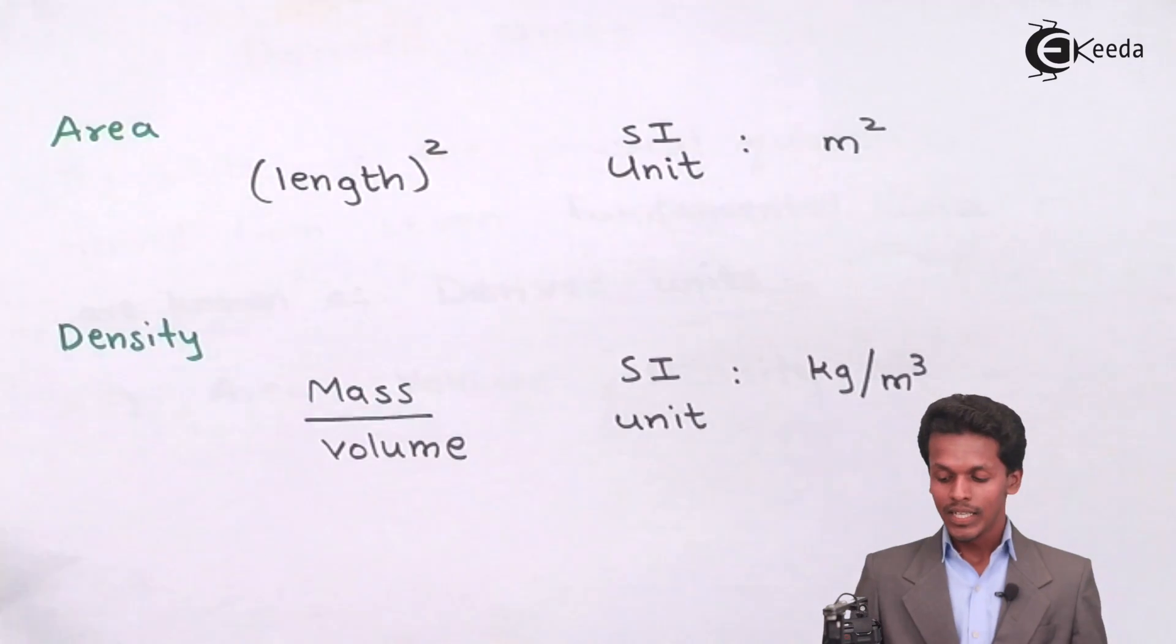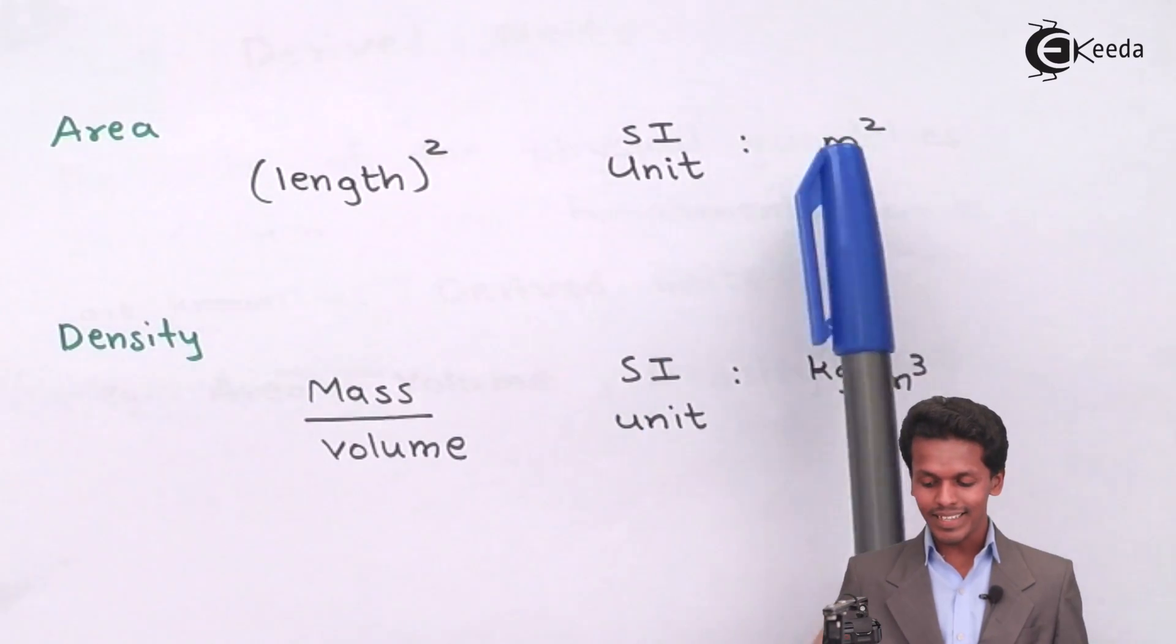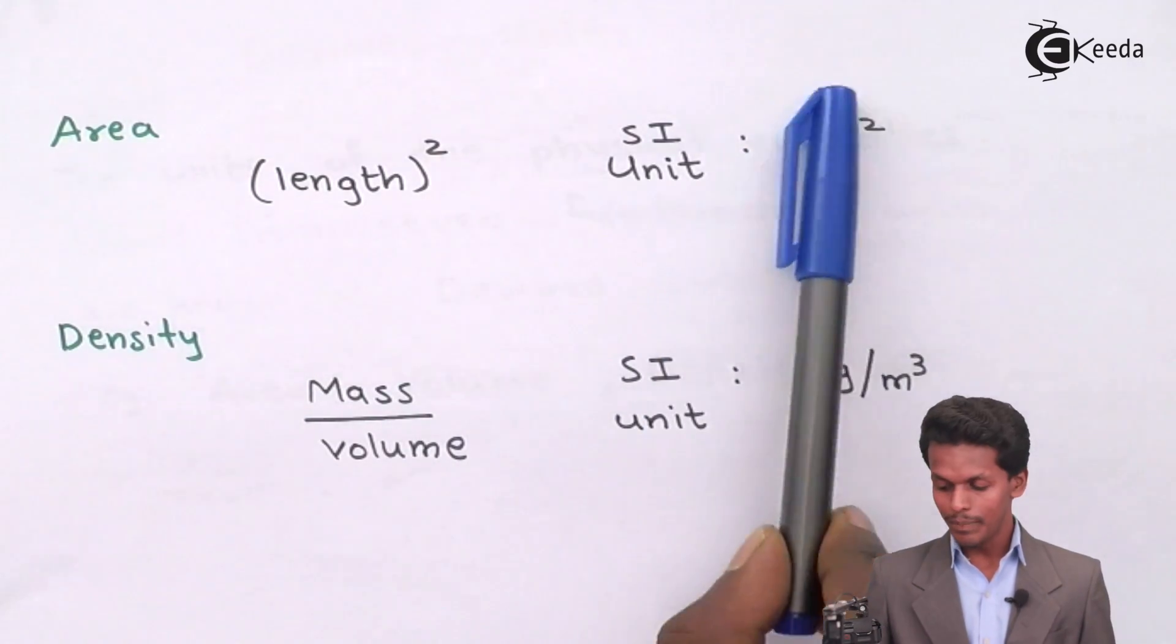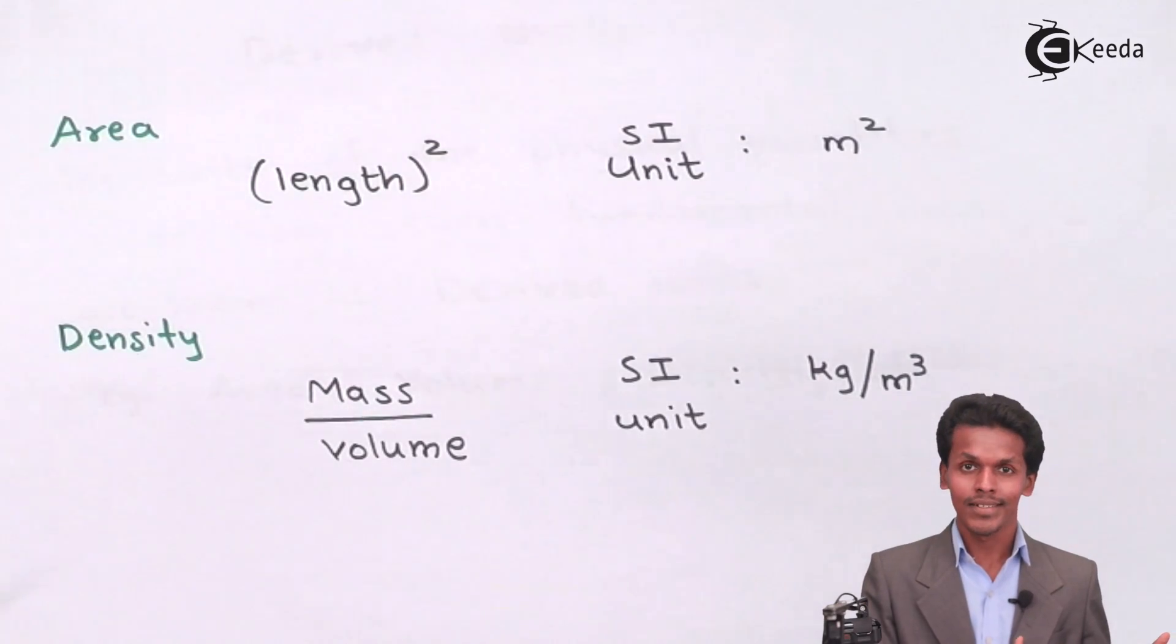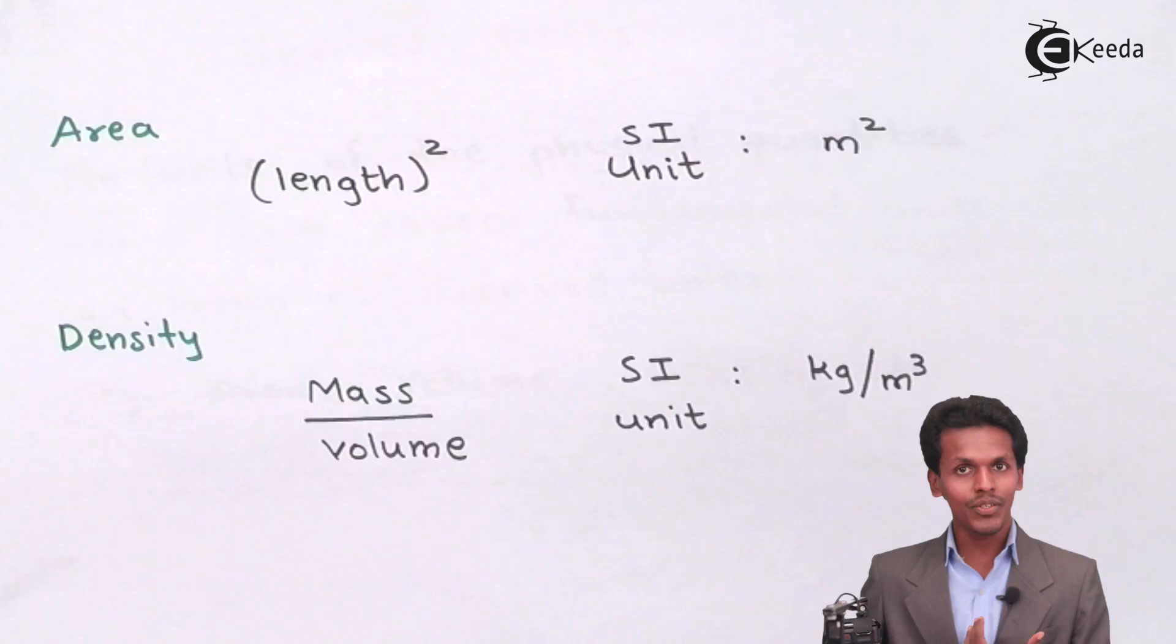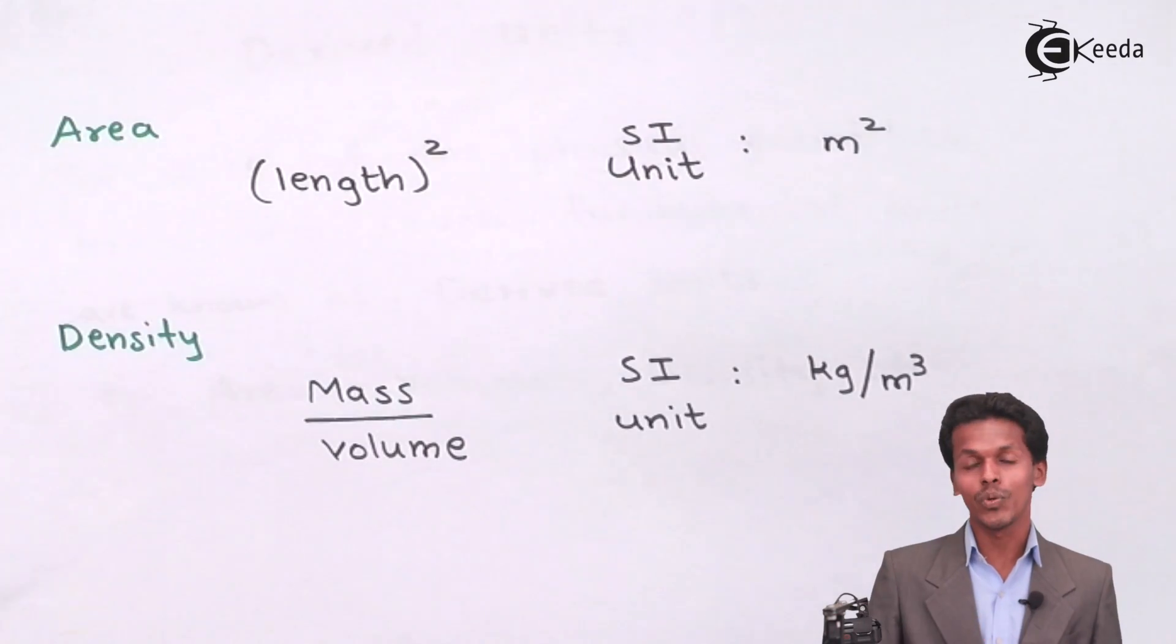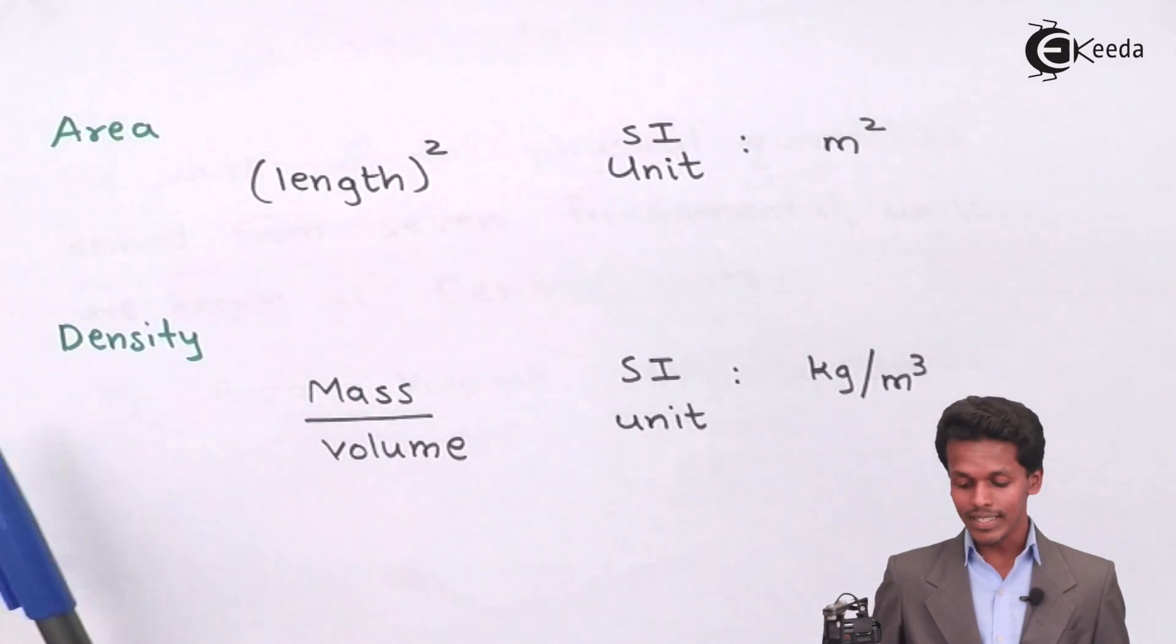Therefore, the SI unit will be meter times meter, which is nothing but meter squared. If we see that this meter squared is derived from the fundamental units, therefore all units we are going to talk about now will be derived units.